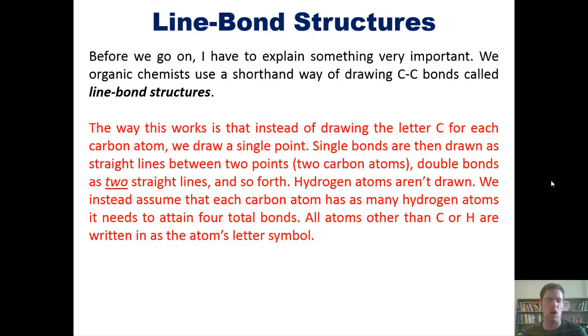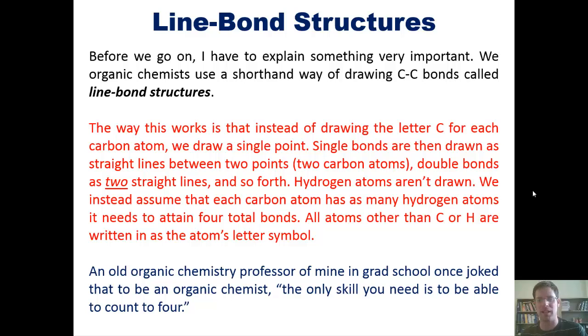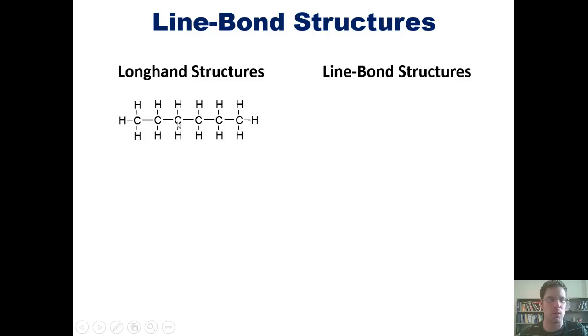We instead assume that each carbon atom has as many hydrogen atoms attached to it as is needed for it to attain four total bonds. All atoms other than carbon or hydrogen are written in as the atom's letter symbol. Joe Kingley, an old organic chemistry professor of mine in grad school, once said that to be an organic chemist, the only skill you need is to be able to count to four. Let me show you this a little bit further. This molecule right here, which is called hexane, if I draw it all out in the longhand structure, I've got to draw all of these bonds between all the carbons and the hydrogens. It just takes forever. The line bond structure, in contrast, looks like this. Keep in mind, each of these points is a carbon atom.